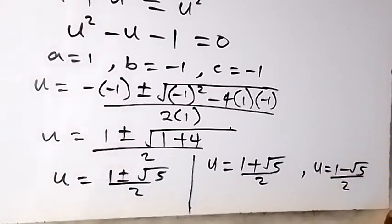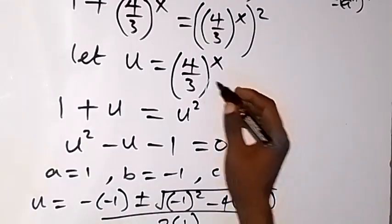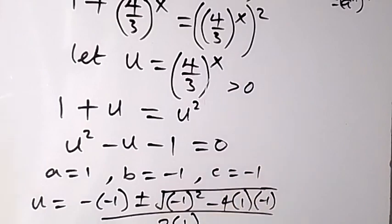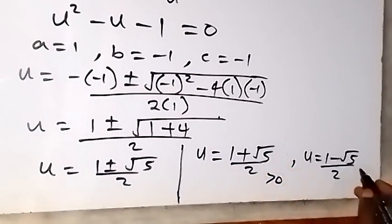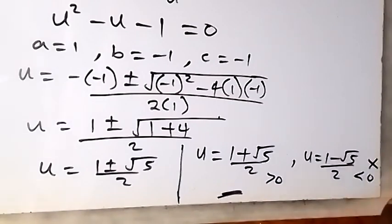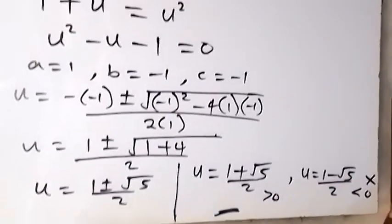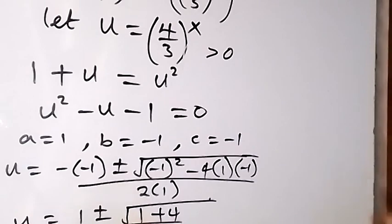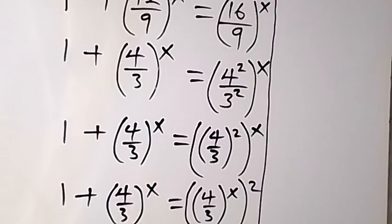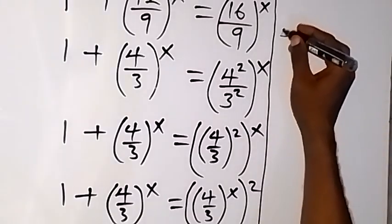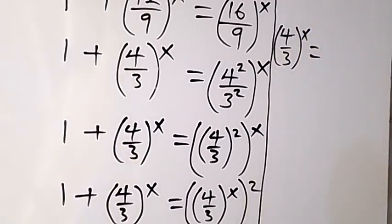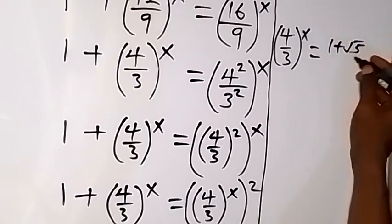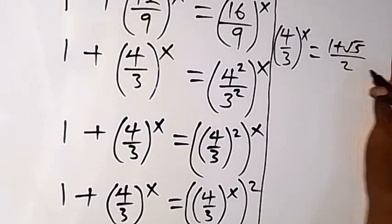From what we represented u as, we understand that u must be greater than 0. The first value gives a number greater than 0, and the second gives a number less than 0, so we won't have a solution from the second. We work with u equals 1 plus root 5 over 2. Since u equals 4 over 3 raised to power x, we can say 4 over 3 raised to power x equals 1 plus root 5, over 2.